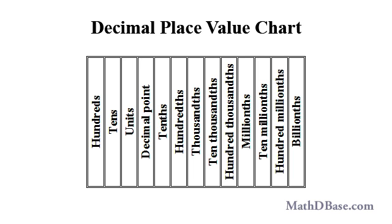The first five places to the right of units are tenths, hundredths, thousandths, ten-thousandths, and hundred-thousandths.